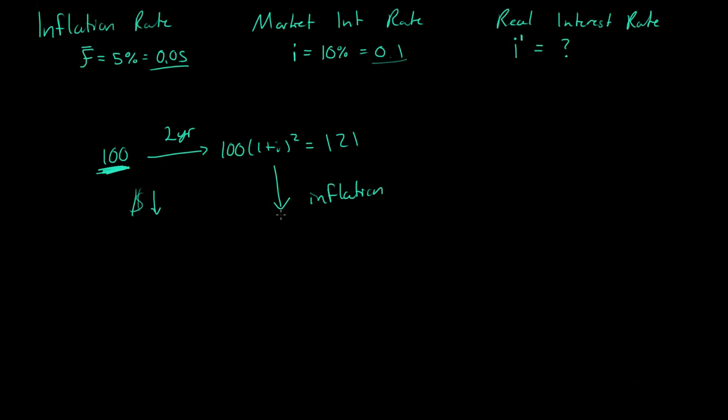So we'll take account of this inflation. So what we do is, we have the $121. And what we do is, we multiply it by 1 plus the inflation rate, to the power of the number of years it went over. And it was over 2 years, right? So 2 years right there. So that's a negative 2.